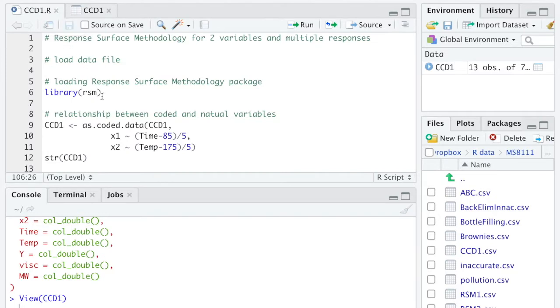First, we are going to load the rsm library, we are going to assign the relationship between the coded and the natural variables using the asCodedData function, and then check the file structure.